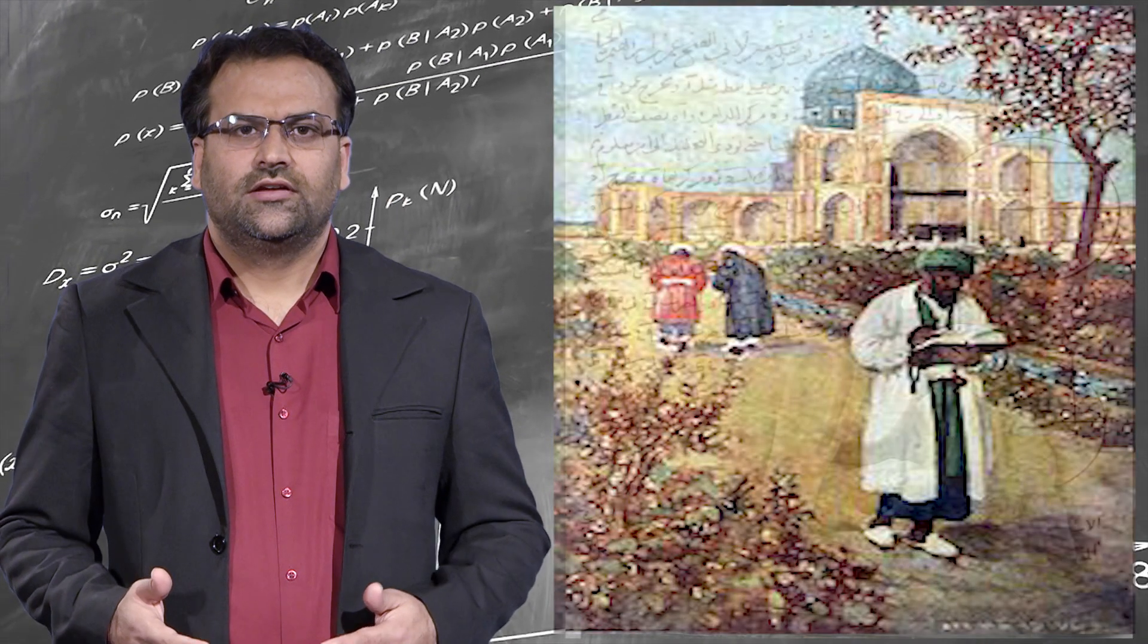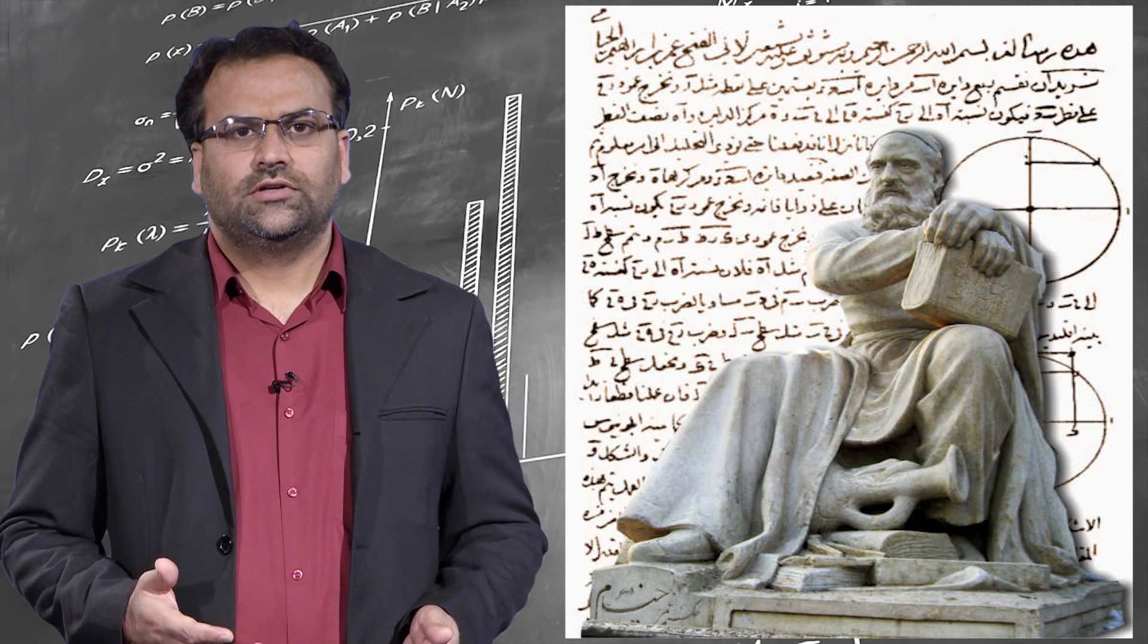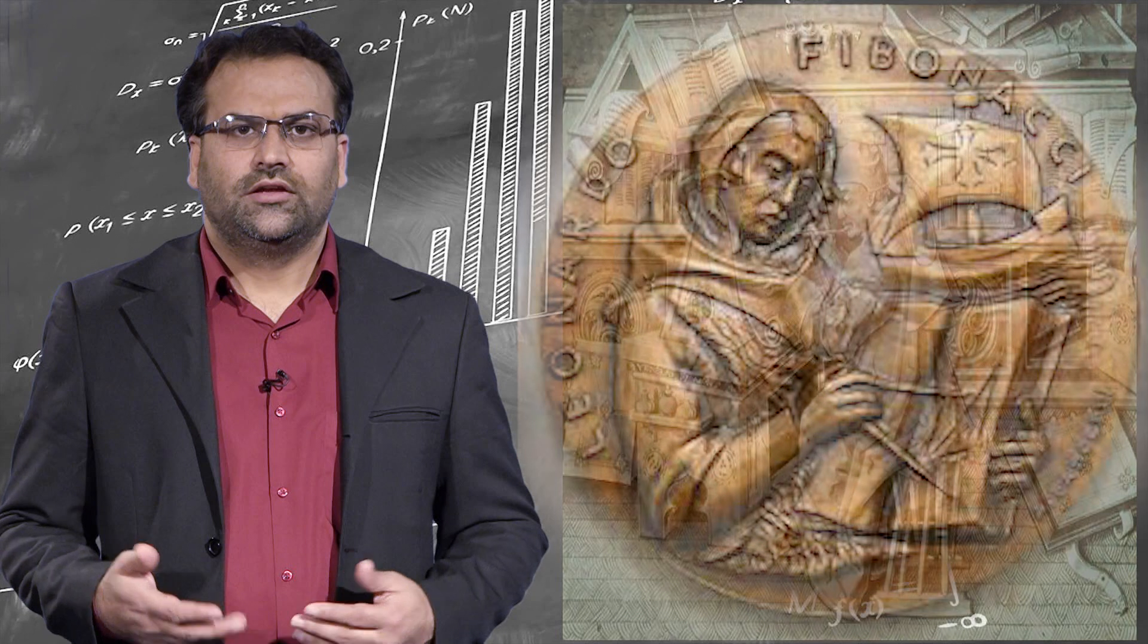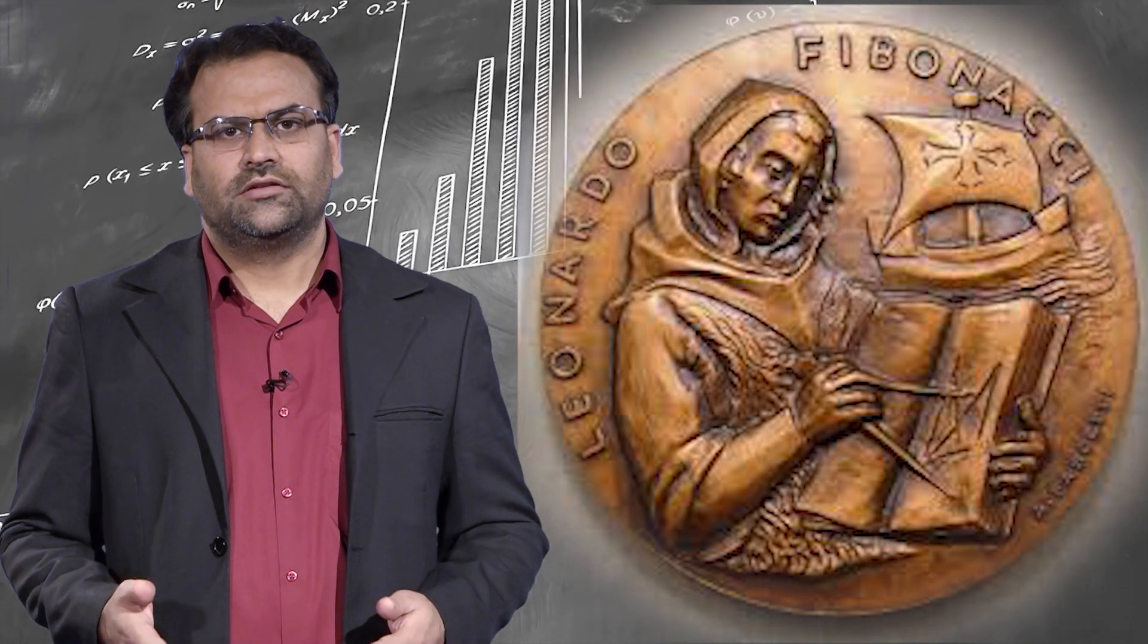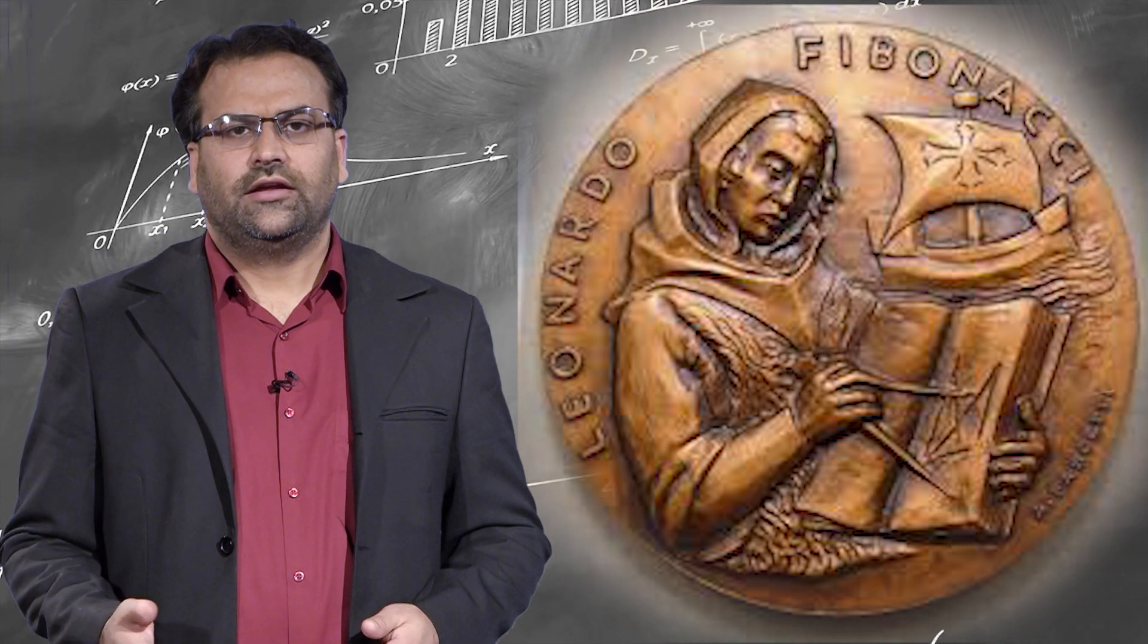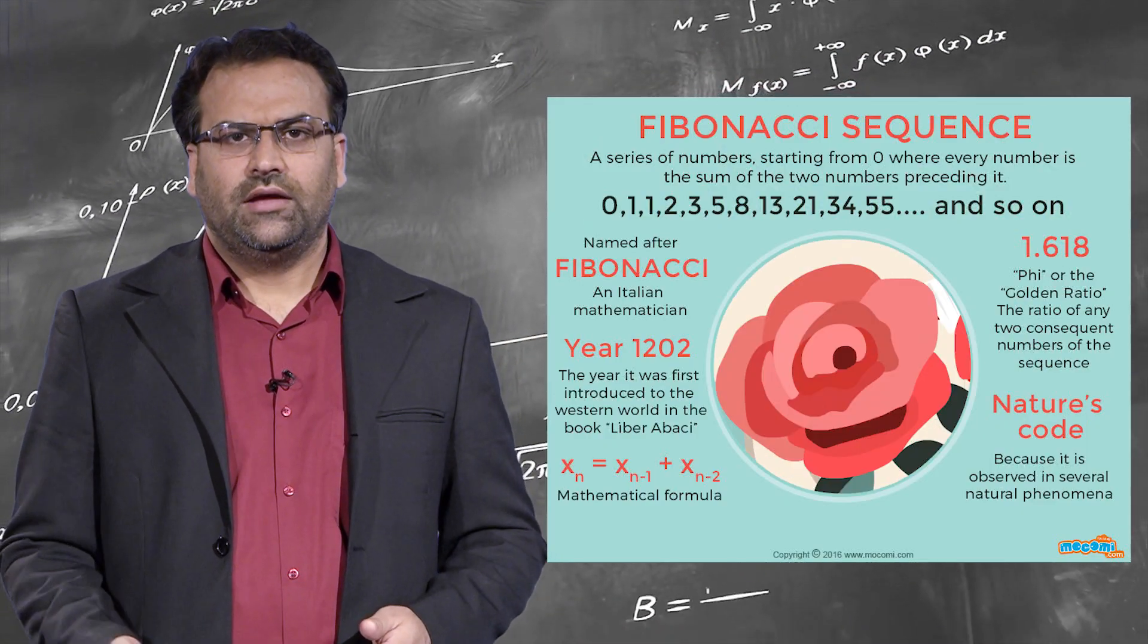In 13th century, the knowledge of mathematics and algebra transferred from Arab to Europe thanks to Fibonacci, the greatest European mathematician of the Middle Ages. Fibonacci's major contribution was in algebra, arithmetic, and number theory through his book Liber Abaci.